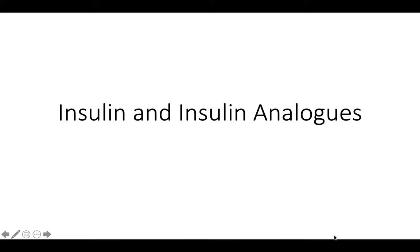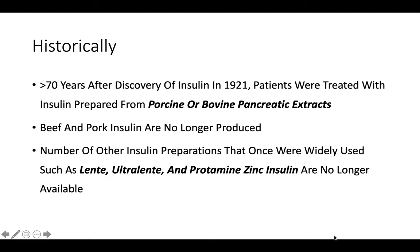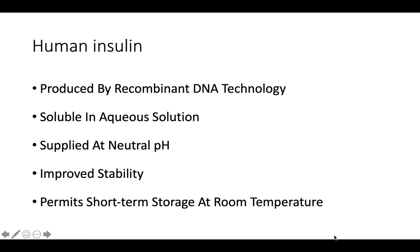Modern human insulins are produced by recombinant DNA technology. They are very soluble, aqueous, at neutral pH, and therefore more stable, permitting short-term storage at room temperature. Insulin is a pre-pro-insulin that is cleaved; cleavage occurs at positions 31 and 32 in the beta chain — important for understanding insulin analogues.